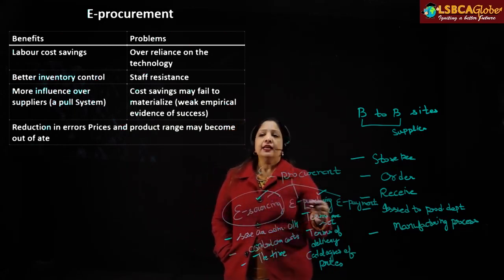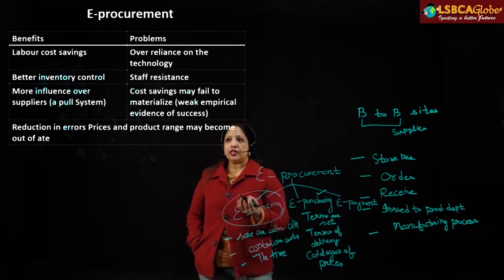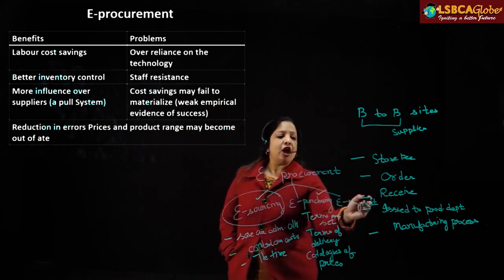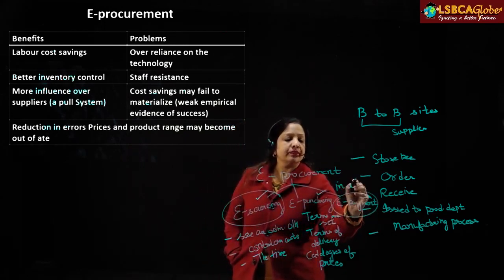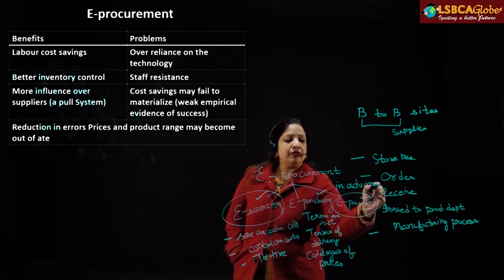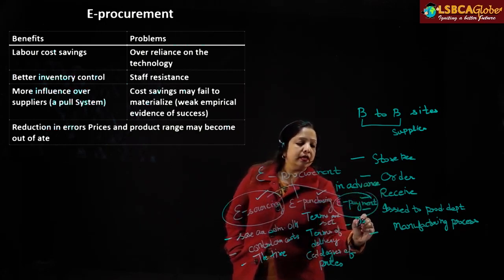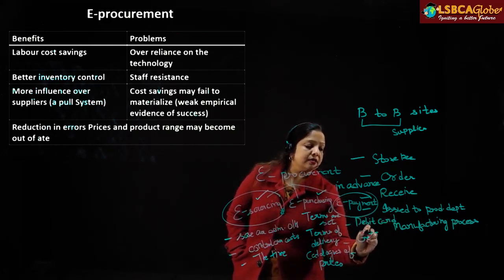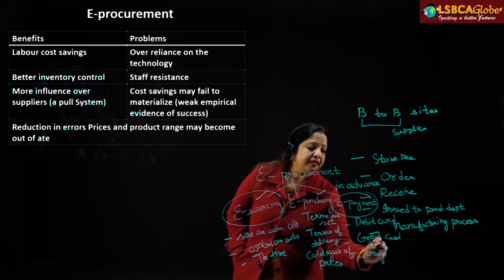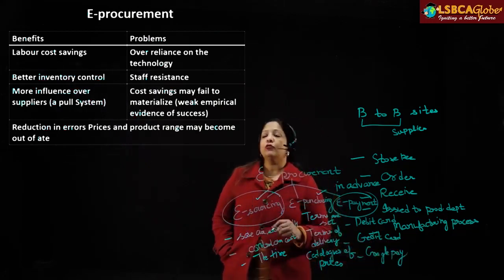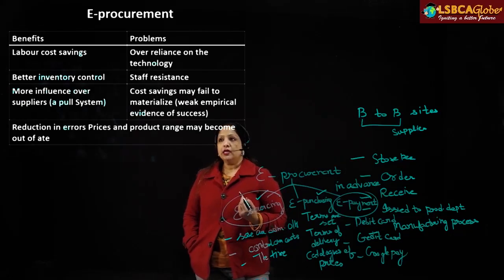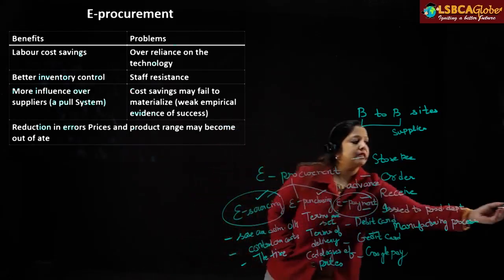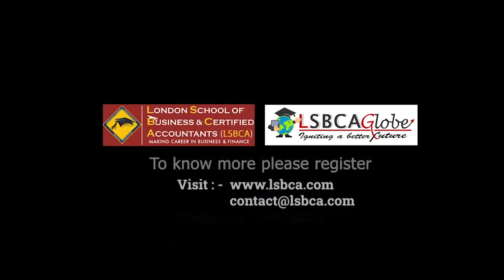Finally, when we place the order, we make the payment. Under e-procurement, payment is either made when the goods reach the businessman or it is made in advance. For e-payment, we can use a debit card, credit card, Google Pay, or Paytm — any of these can be used for e-payment. So that is basically e-procurement.